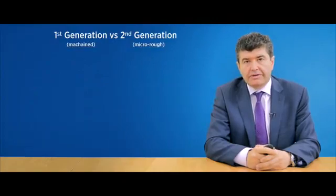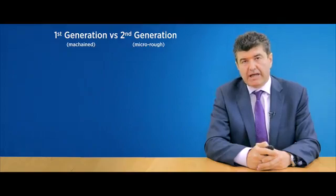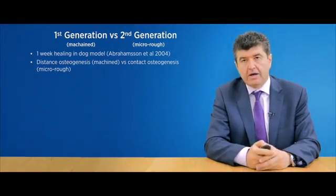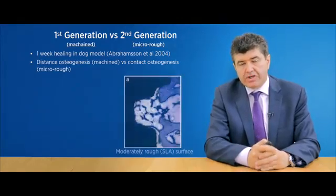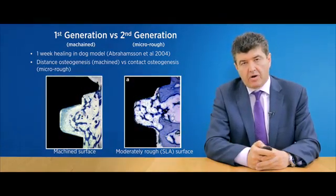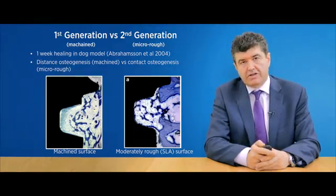If we consider a comparison between first and second generation implants, the most telling differences between the two is the nature of osseointegration that occurs. Moderately rough implants are characterized by both distance and contact osteogenesis, as can be seen on the right, whereas machined surfaces are characterized by distance osteogenesis only, as seen on the histological section on the left.